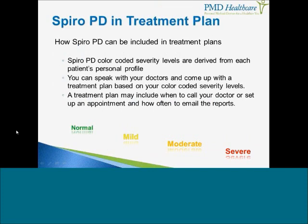Physicians may want to use SpiroPD in a treatment plan. SpiroPD has color-coded severity levels derived from your personal profile and demographics. You can talk to your doctor and come up with a treatment plan based on these color-coded severity levels. For example, if your normal is moderate and every day you see moderate results, but then all of a sudden you see it dip into severe — that's probably a good time to give your doctor a call and let them know your levels are changing. You may also want to discuss with your doctor how many times a month they'd like you to send your report through email.